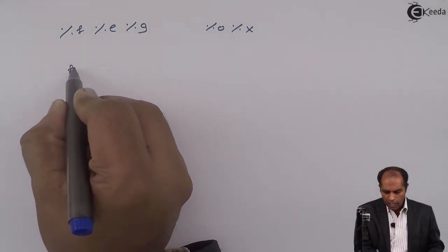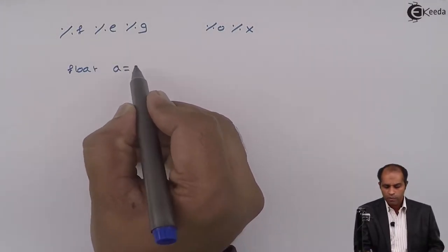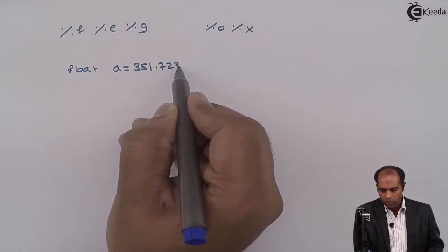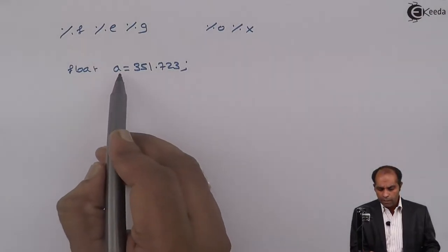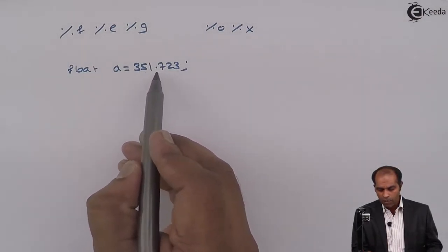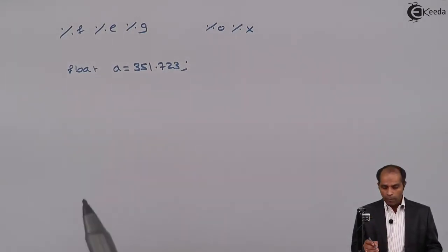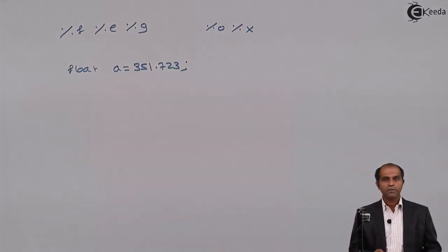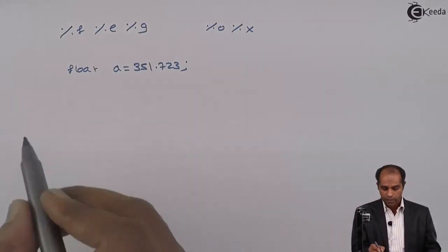Suppose I have a float variable a equals 351.723. Assume that I have declared a variable a with the number 351.723. This number can be displayed using various specifiers. Let me write this variable with all these specifiers.